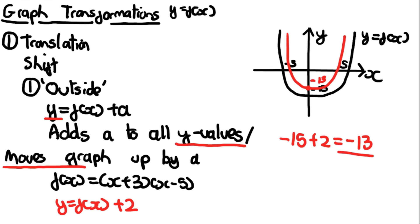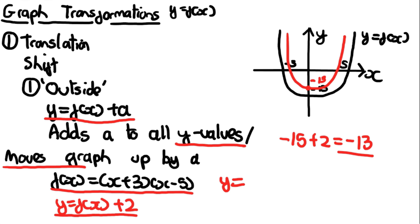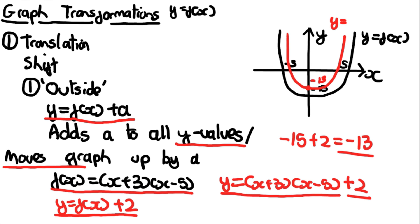Remember, y = f(x) + a is the new equation, so y = f(x) + 2. We can say the new equation is y = (x+3)(x−5) + 2. The only difference between the two graphs is the plus 2 on the end. The original graph was y = (x+3)(x−5), and the new graph is y = (x+3)(x−5) + 2.